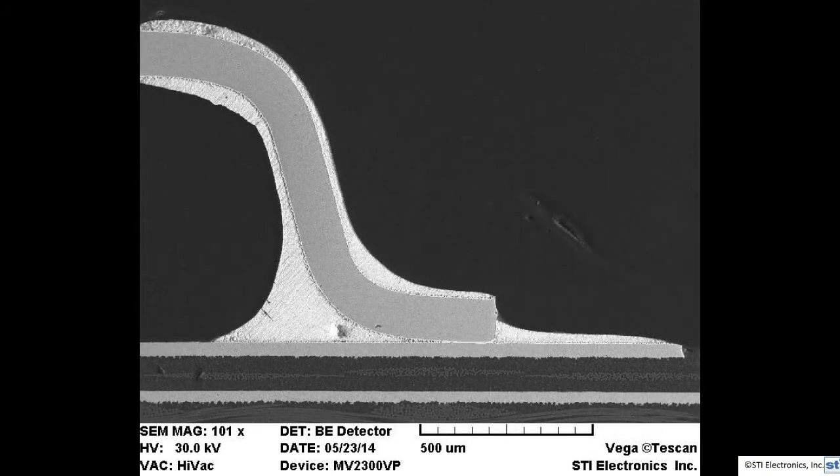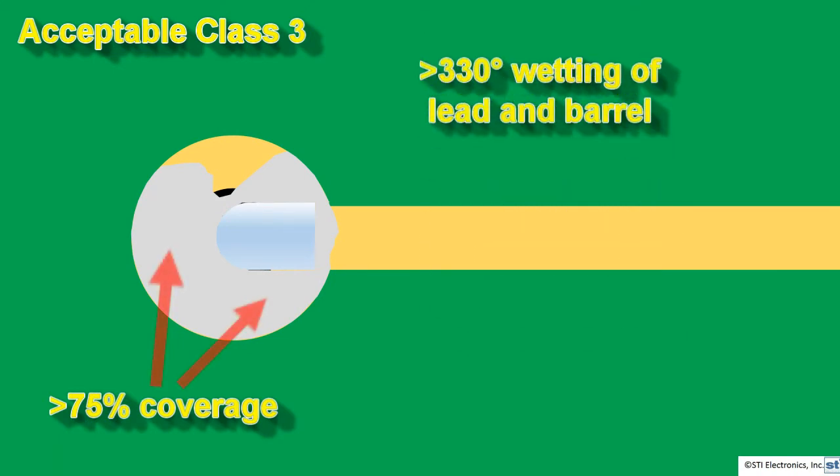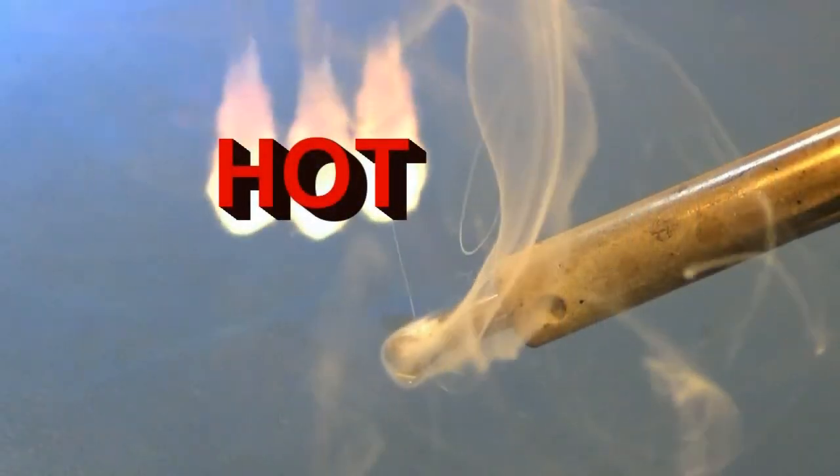Now you should have a good grasp on what is acceptable wetting and what is not acceptable. Keep in mind that the J-Standard 001 does not require complete wetting for all the various connection types. This is the end of Hot Tips number 3. You should now have an understanding of solder wetting and how it affects solder connections. Be sure to contact any of our training staff if you have a question you would like to see answered in a Hot Tips video. Make sure you check YouTube, Facebook, or LinkedIn for the next extraordinary episode of Hot Tips.